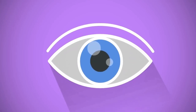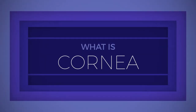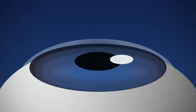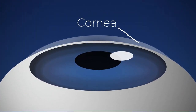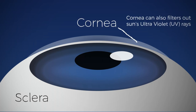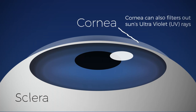What is the cornea? The cornea is your eye's clear protective outer layer. Along with the sclera, which is the white of your eye, it serves as a barrier against dirt, germs, and other things that can cause damage. Your cornea can also filter out some of the sun's ultraviolet light, but not much.